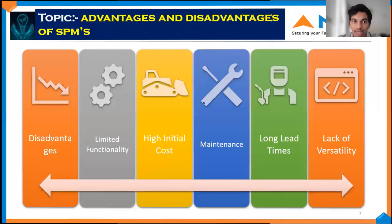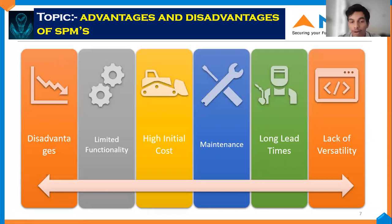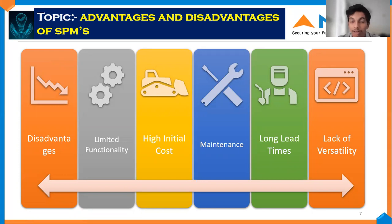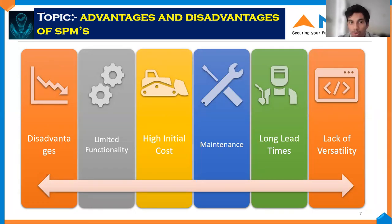The disadvantages of the SPM machine are: the functionality of the machine is very limited and the initial cost of the machine is also very high. The maintenance cost is also high because the parts made for SPM machines are completely custom made, so it will be hard to find each part required for maintenance. Long lead times and lack of spare parts availability is also one of the major disadvantages of an SPM machine.